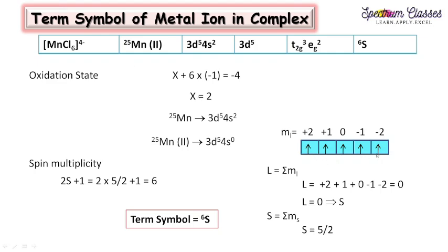With a weak field ligand, all five d electrons are unpaired. Calculating the total orbital angular momentum: since it is a half-filled d5 system, all contributions cancel out, giving L = 0, which corresponds to the S term. With five unpaired electrons, n+1 = 6, so the term symbol is ⁶S.